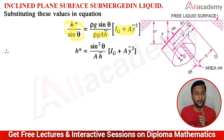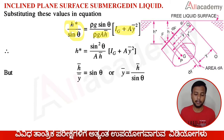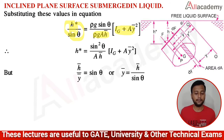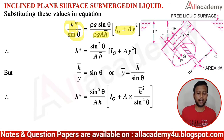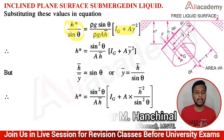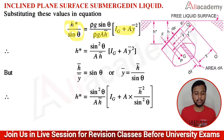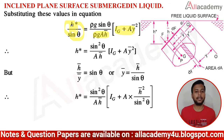From the sine relation, H̄/Ȳ = sin θ, so Ȳ = H̄/sin θ. Substituting the expression for Ȳ into the equation, we get: H* = (sin²θ / AH̄) × (IG + A × H̄²/sin²θ).